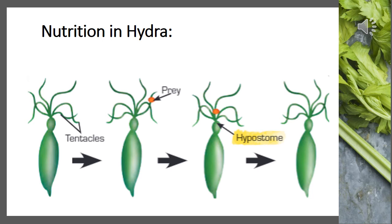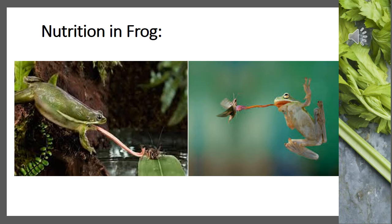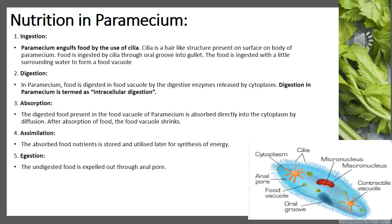Now let's talk about nutrition in frogs. The frog has a long sticky tongue, which it uses to catch insects. This tongue is attached to the lower jaw and remains folded in its mouth. As soon as prey comes near, the frog extends its tongue, catches the prey — such as an insect — and pulls it inside the mouth very quickly. It has a well-developed digestive system, so digestion, absorption, and assimilation all take place in the body.